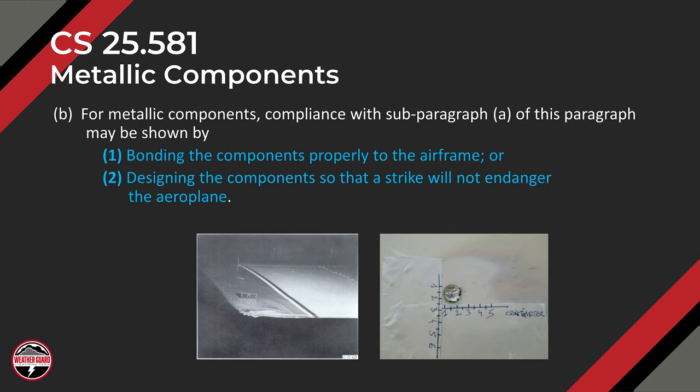Electrical bonding does play into that — you want to give the lightning current someplace to go. But even then, there are still structural effects that can happen on aluminum airplanes. Just to the right is an image of a typical lightning attachment location where it melts a rivet head or melts a small part of the metallic surface of the aircraft.